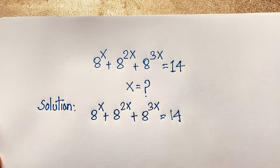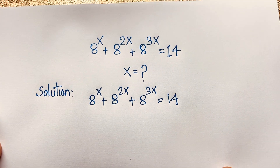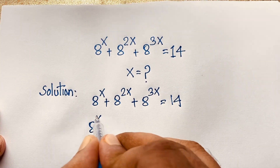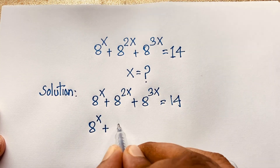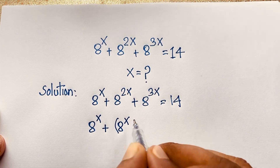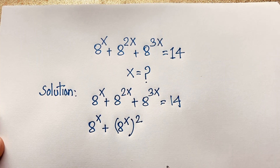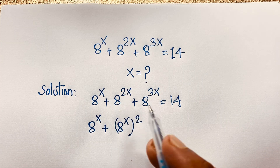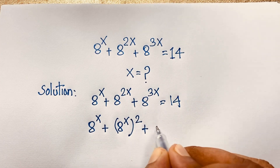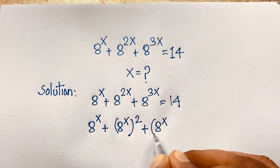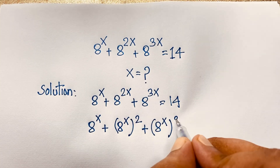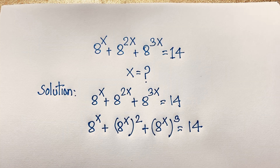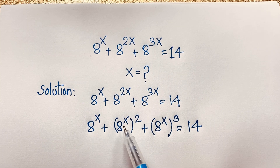You can see here 8 to the power x. Then 8 to the power 2x can be written as (8^x) squared, according to the exponential formula — since 2 times x gives 8^(2x). Similarly, 8 to the power 3x is (8^x) to the power 3. So we have (8^x) + (8^x)² + (8^x)³ = 14.